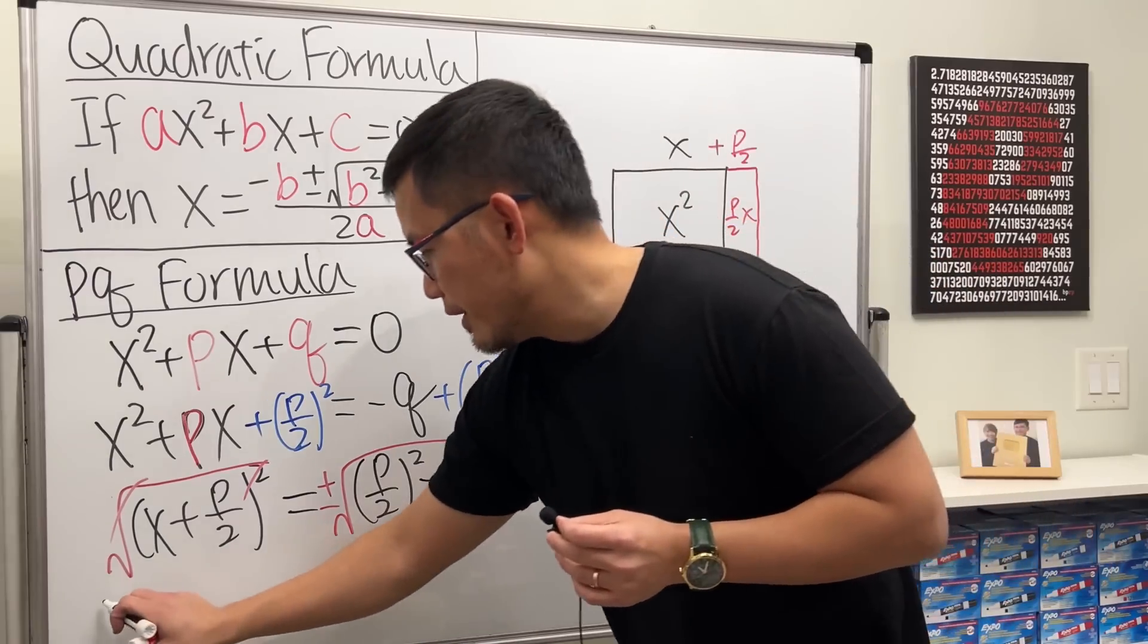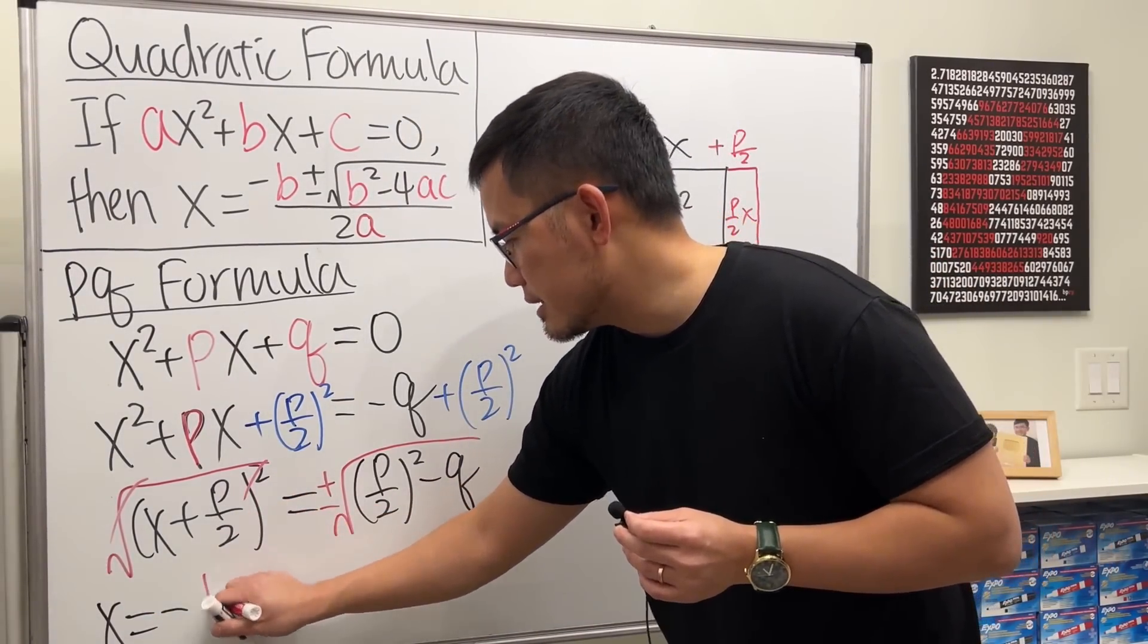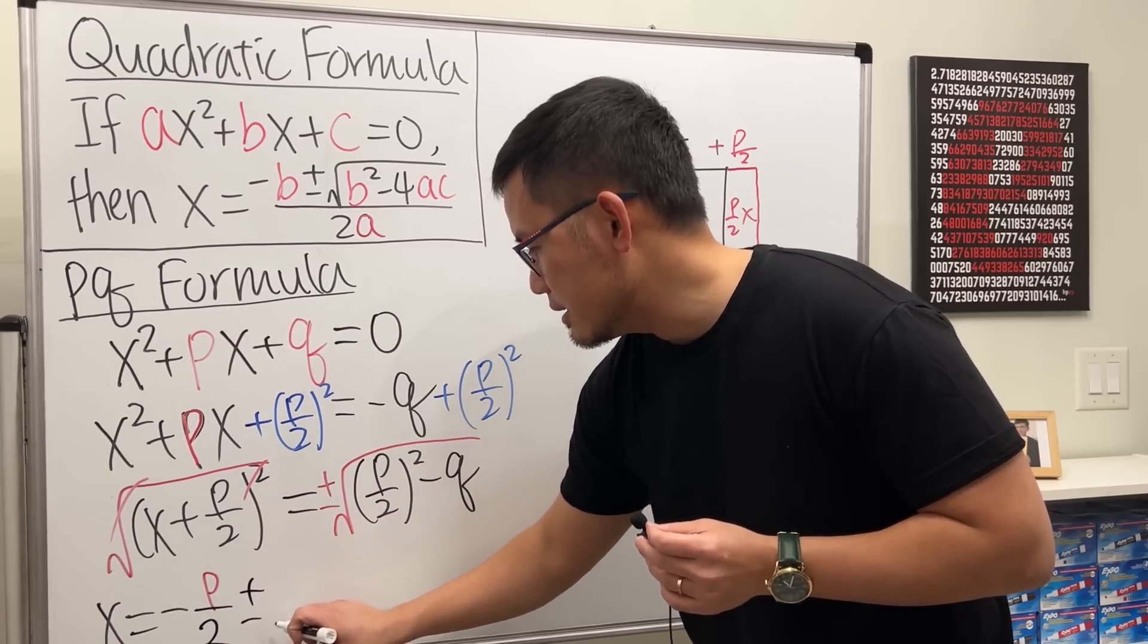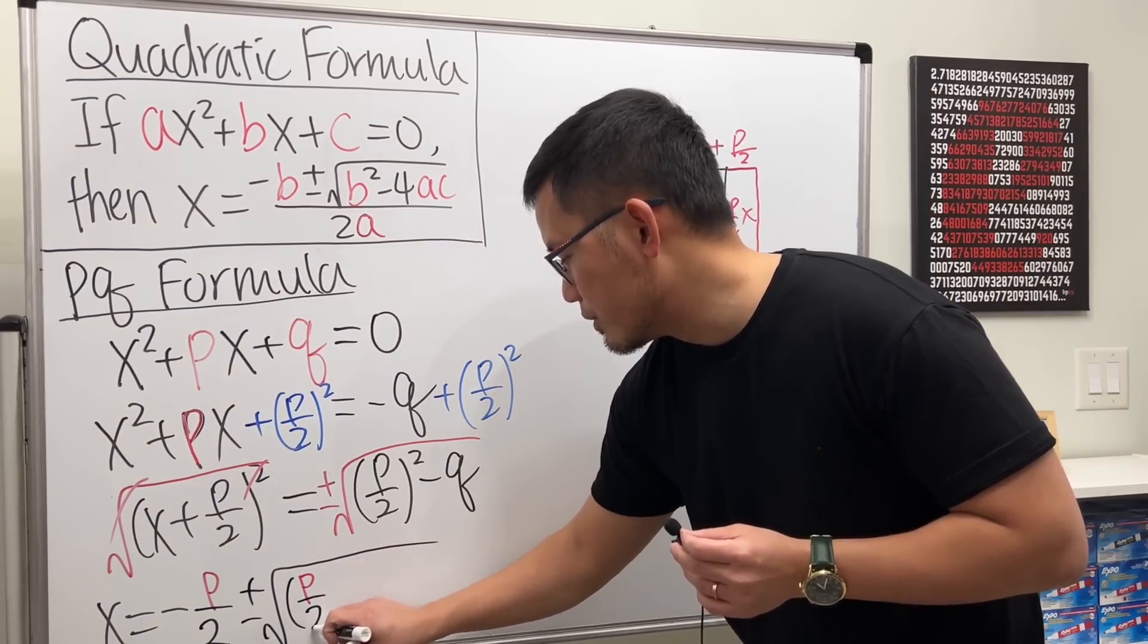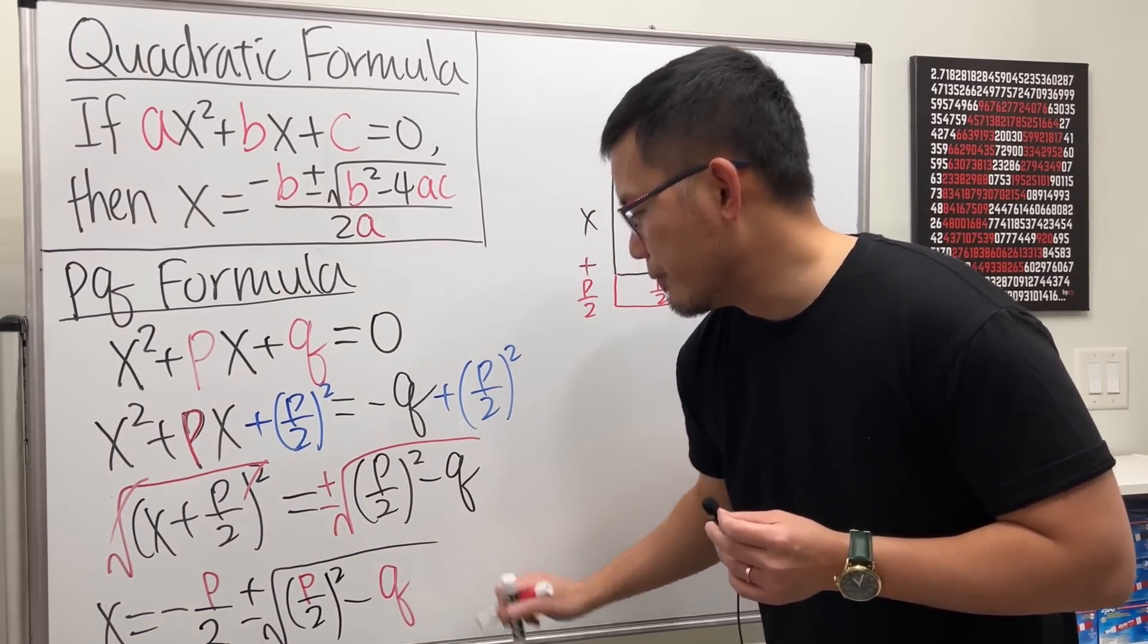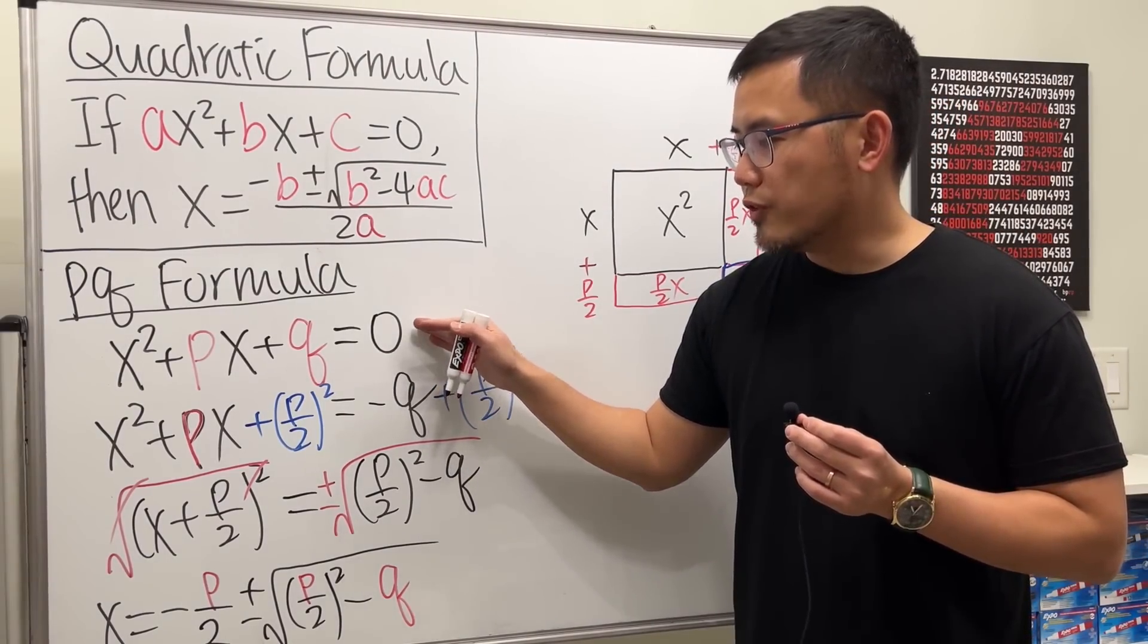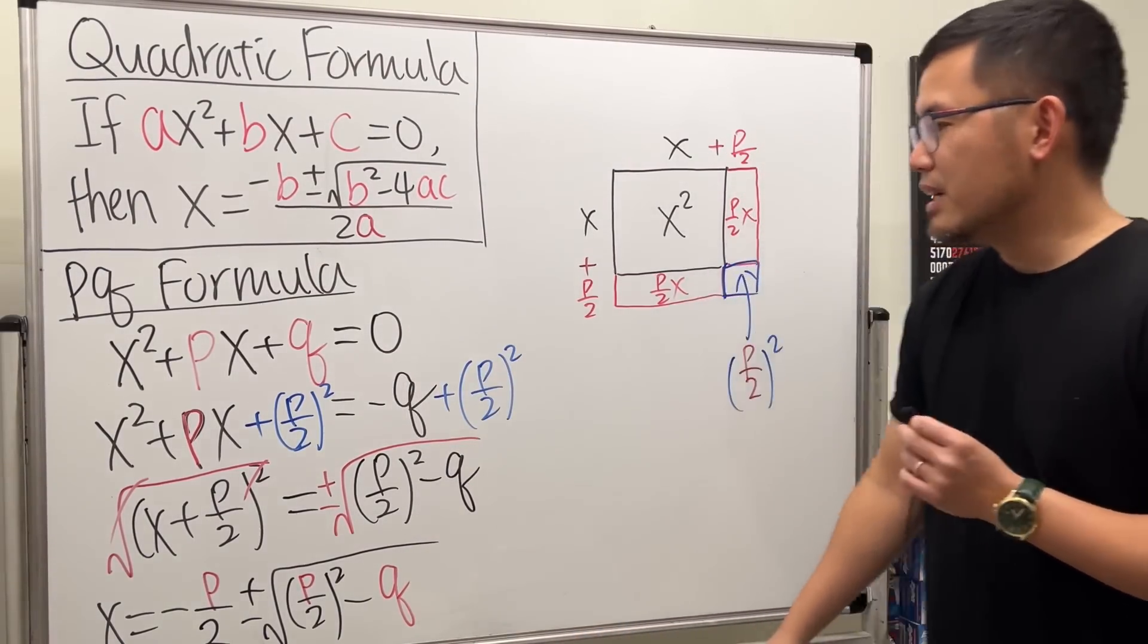So, ladies and gentlemen, x equals negative P over 2, plus or minus the square root, and then here is the P over 2 squared, and then minus the Q. So, if this is the quadratic equation form, then you can totally just use this right here to help you out.